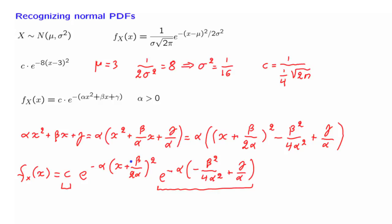Mu has to be equal to what we have here. But here there's a minus sign here. There's no minus sign. And so mu is going to be the negative of what we have up here. It's minus beta over 2 alpha.